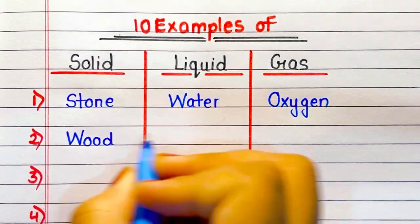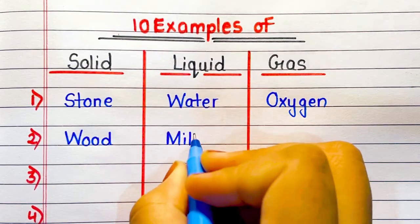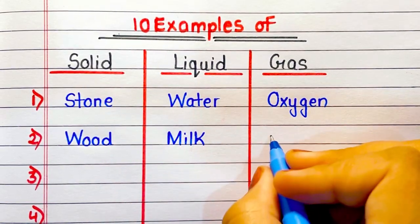Number 2. Solid, wood. Liquid, milk. Gas, nitrogen.